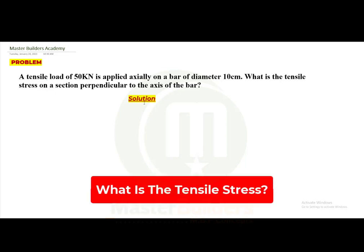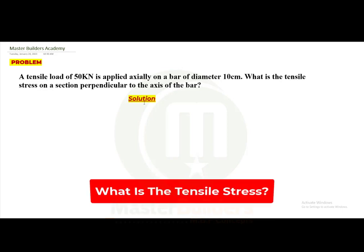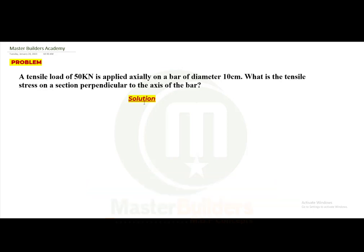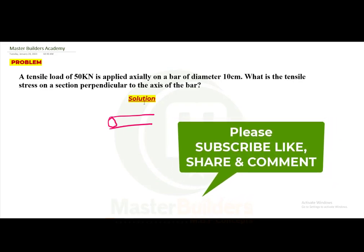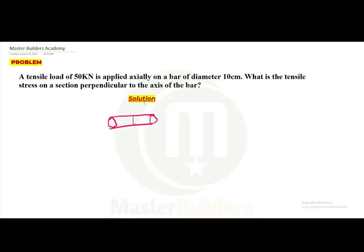So guys, we have a bar that is loaded axially with a tensile load of 50 kilonewtons. We can liken the bar to be something like this. This is the diameter, that is 10 cm.